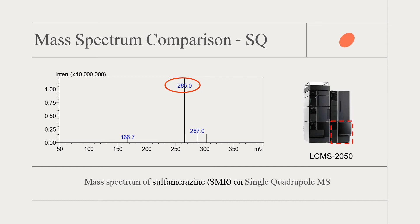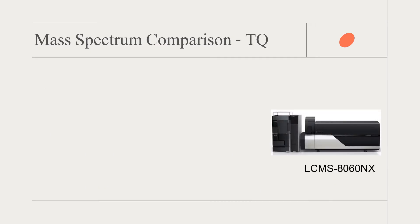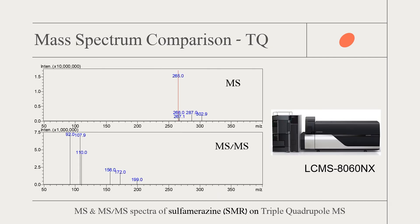On LC-MS/MS TQ, we can analyze the compound in MS and MS/MS mode simultaneously. Same as in single quadrupole, the mass peak at m/z 265 appears in the MS spectrum. Additionally, we also obtain MS/MS spectrum of the precursor m/z 265, which shows the fragments from the precursor by CID process. These fragments are related to the functional groups in the molecule. Therefore, MS/MS spectrum is useful in structural confirmation.